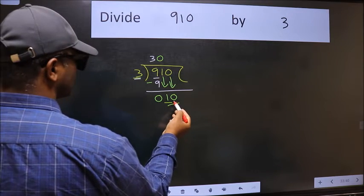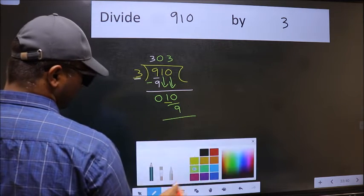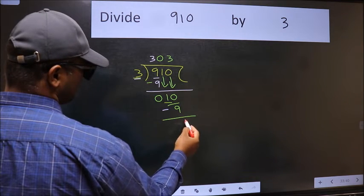Now 10, a number close to 10 in the 3 table is 3 times 3 is 9. Now we should subtract. We get 1.